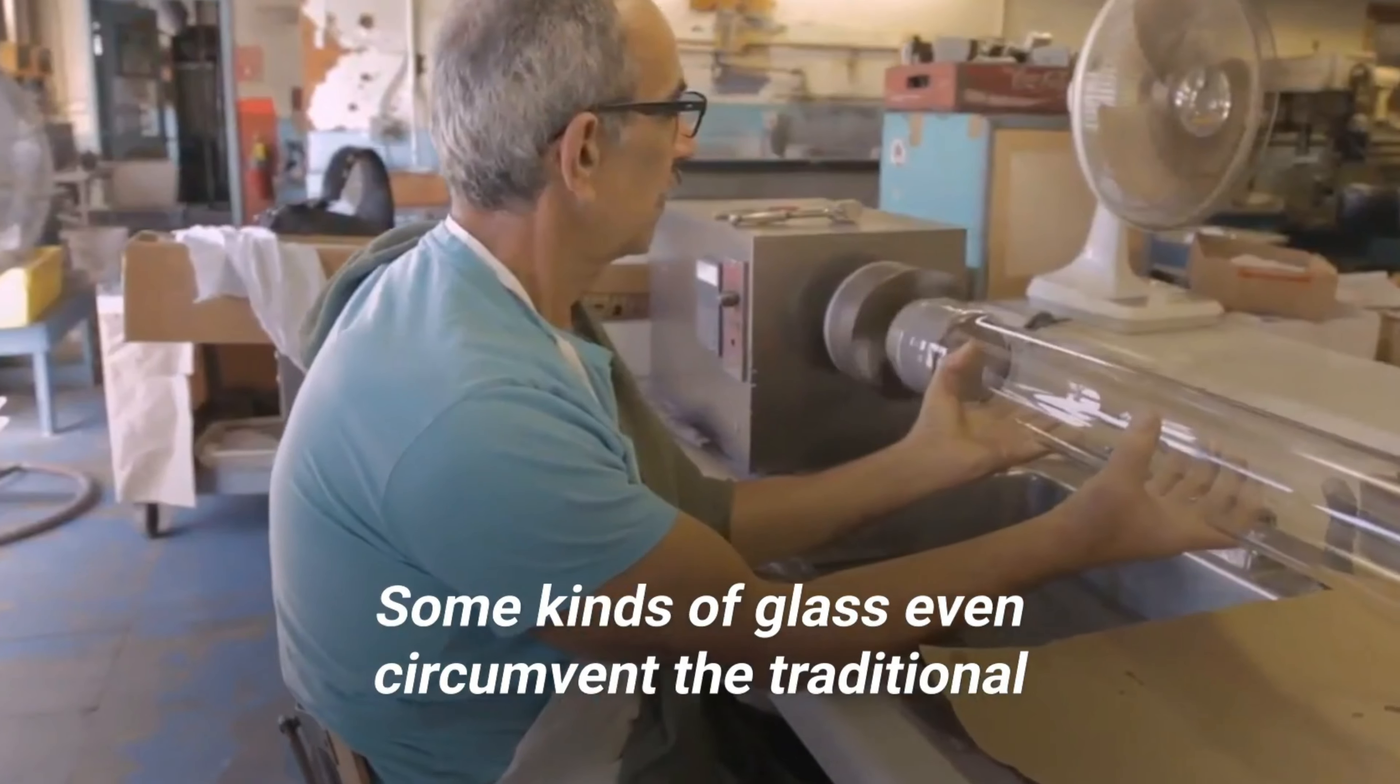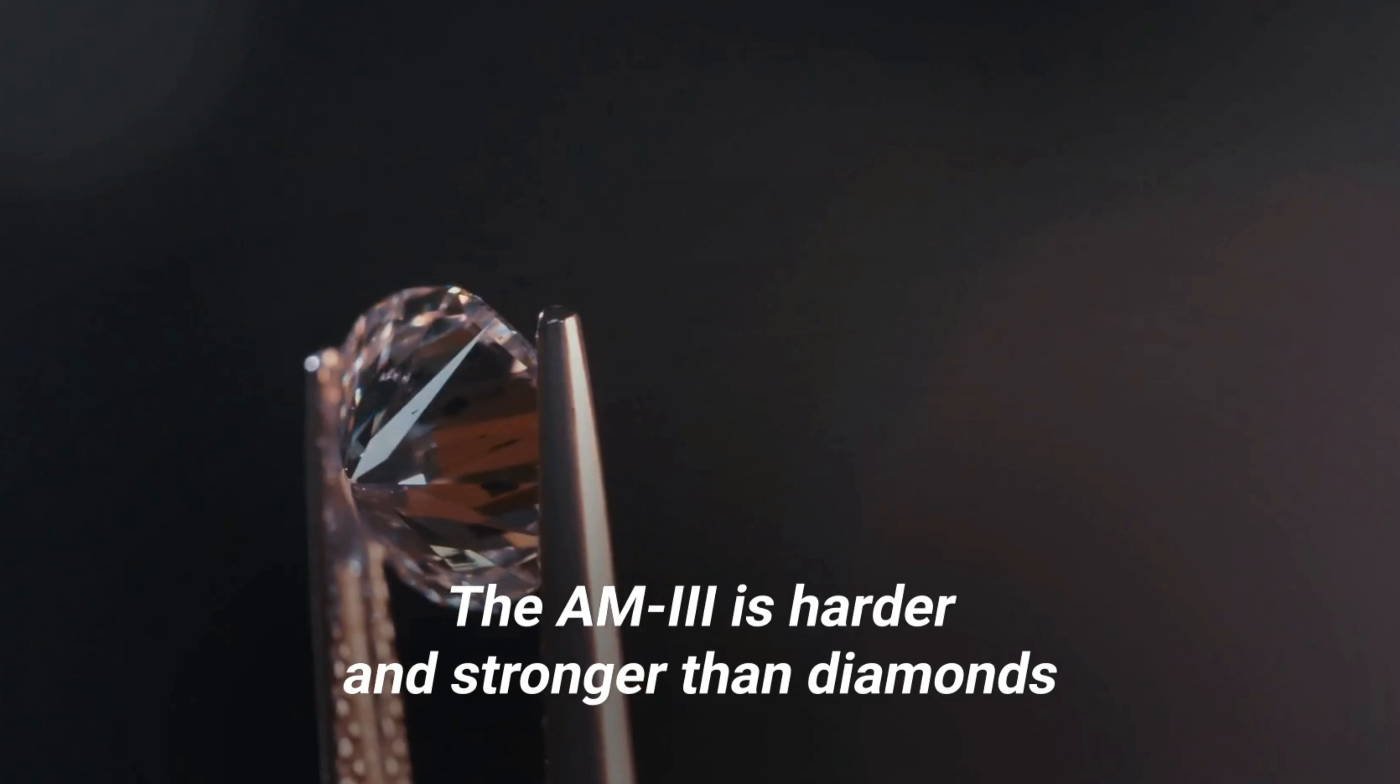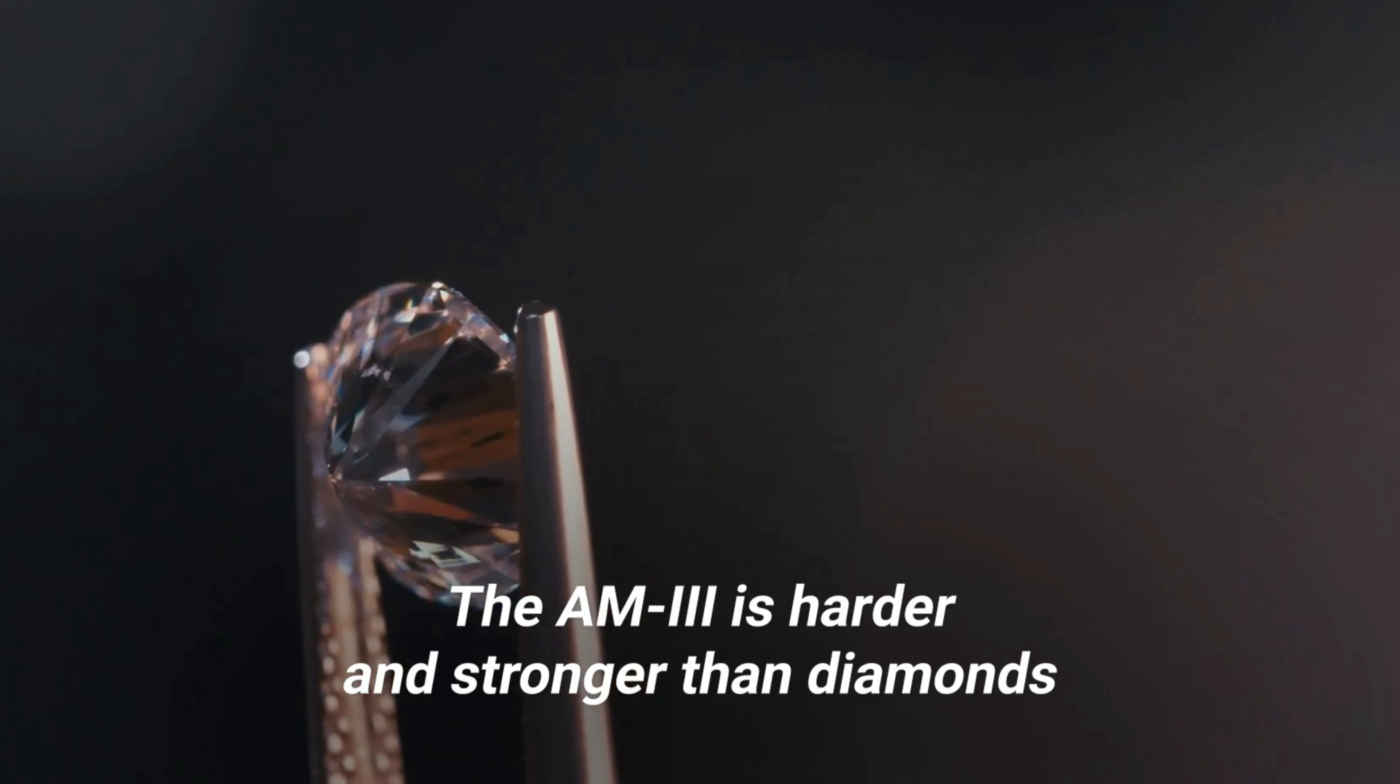Some kinds of glass even circumvent the traditional process entirely. The AM3 is harder and stronger than diamonds, but it's created a lot like their natural formation, by subjecting a form of carbon to extremely high amounts of pressure at scorching hot temperatures.